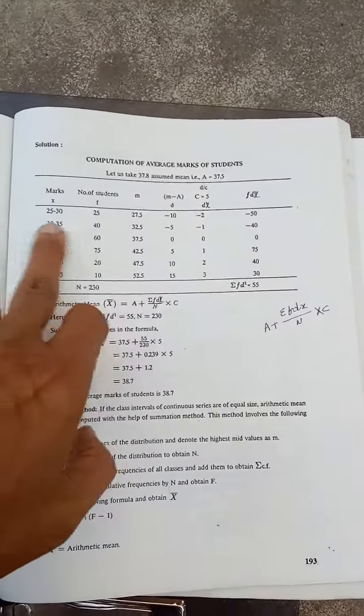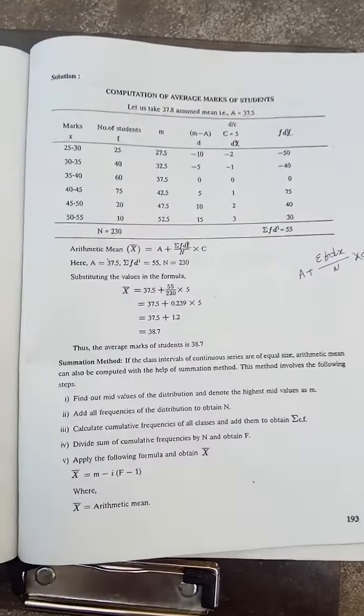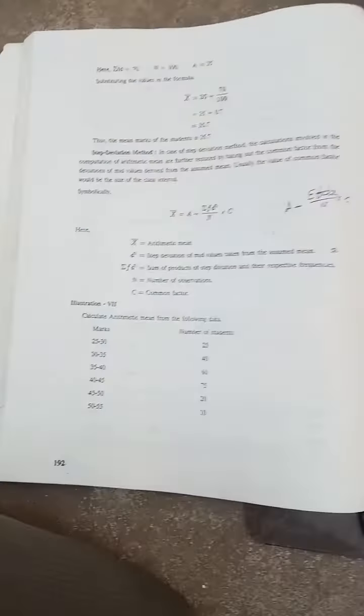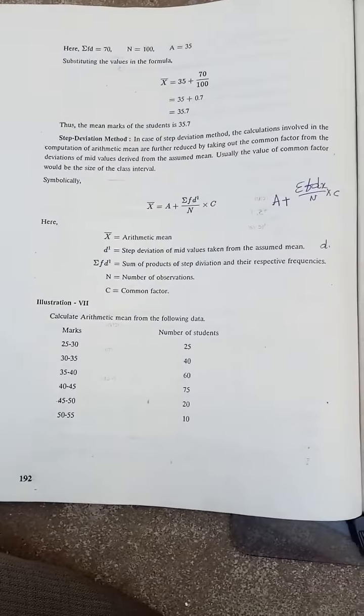Okay, dx. dx is equal to d/c. Class interval is 5. Here, the difference between lower limit and upper limit.